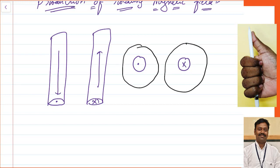If you take your right hand, your curled fingers indicate the direction of the magnetic field where your thumb indicates the direction of current. In the case of the first conductor, you can see the current is going inside — your thumb will point into your book, so your curled fingers will indicate the direction of the magnetic field. For a cross (going inside) you get a clockwise direction, and for a dot (coming outwards) you get a counterclockwise direction.